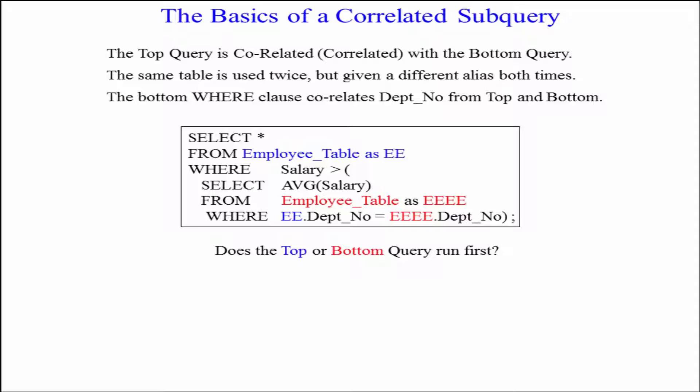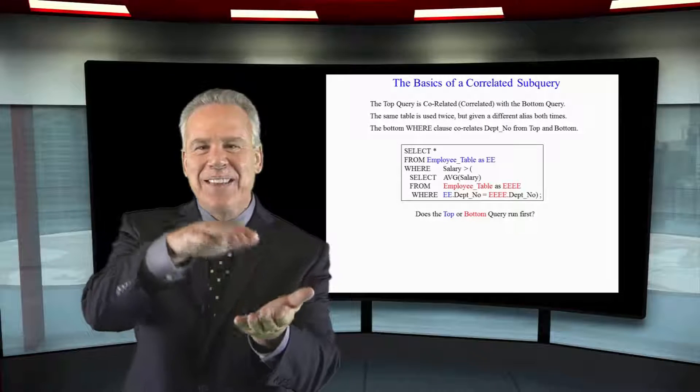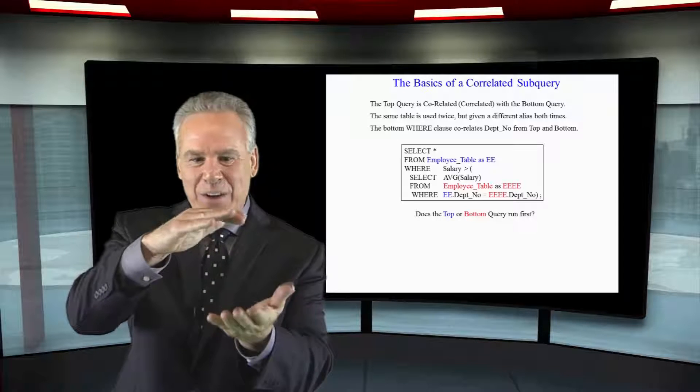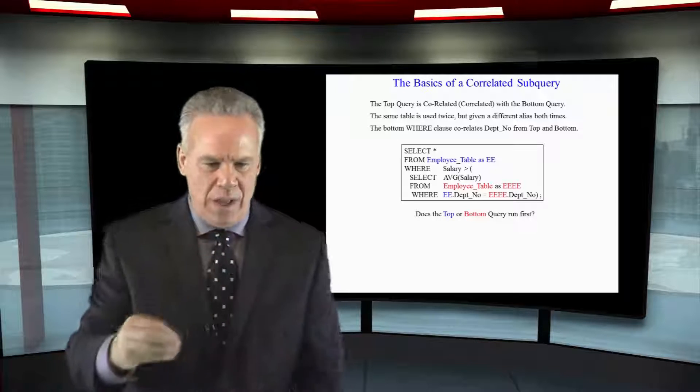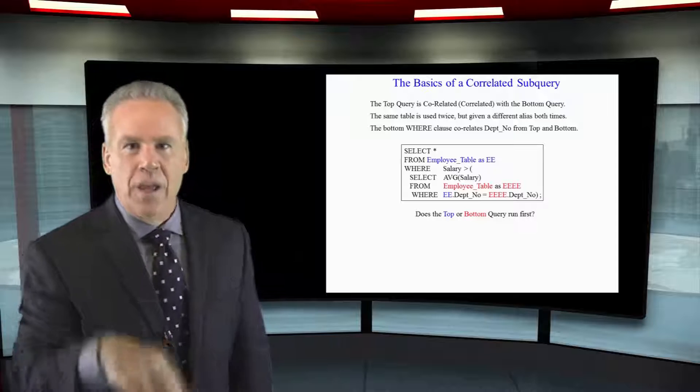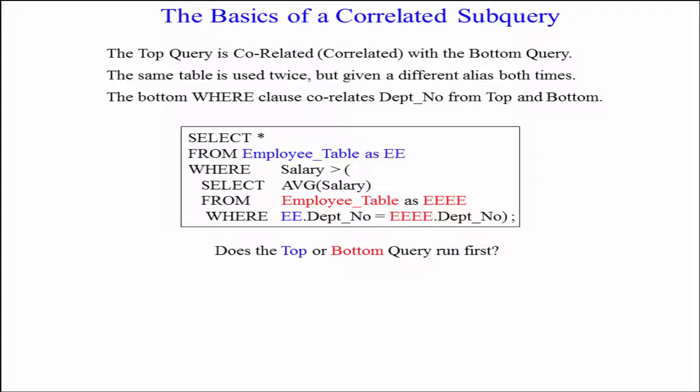It's the top. It goes and gets everything from the employee table. And then it says, okay, who's our first employee? And they go, well, it's this person in department 400. Then they run the bottom query to find out the average salary where e.dep no equals e.dep no.